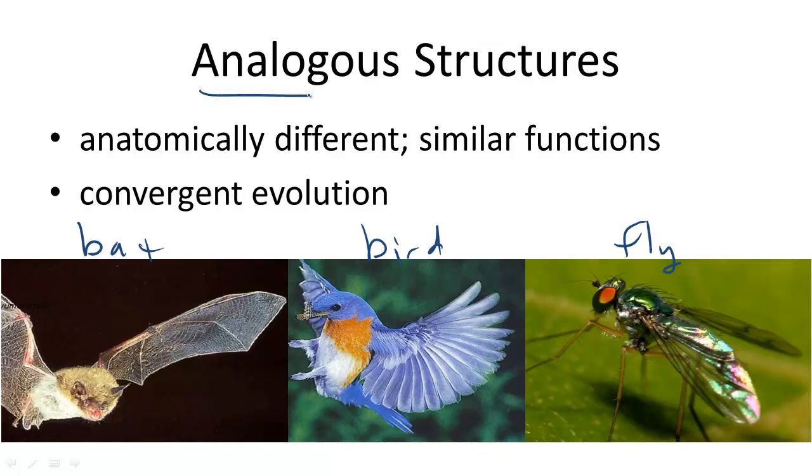First, an analogous structure, as opposed to a homologous structure, are anatomically different.